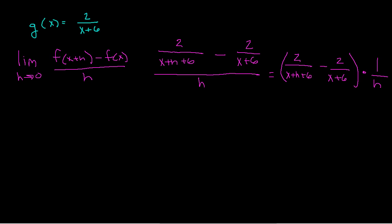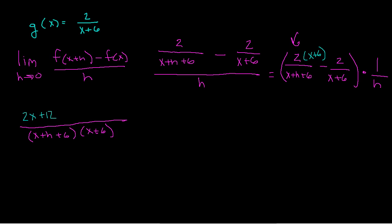A lot of students want to distribute the 1 over h first — don't do that, it makes the problem harder. Instead, start inside the parentheses and get a common denominator. The common denominator is just the two denominators multiplied together. The first fraction needs to be multiplied top and bottom by x plus 6, giving 2x plus 12. The second fraction needs x plus h plus 6, and since there's a negative, we get negative 2x, negative 2h, negative 12. All times 1 over h.